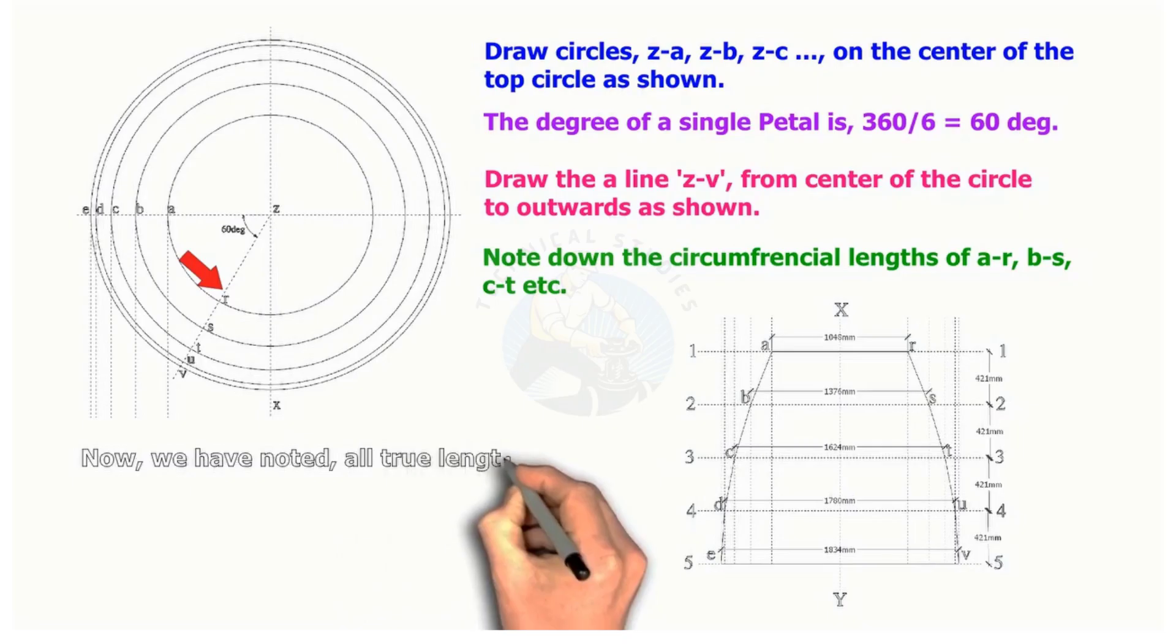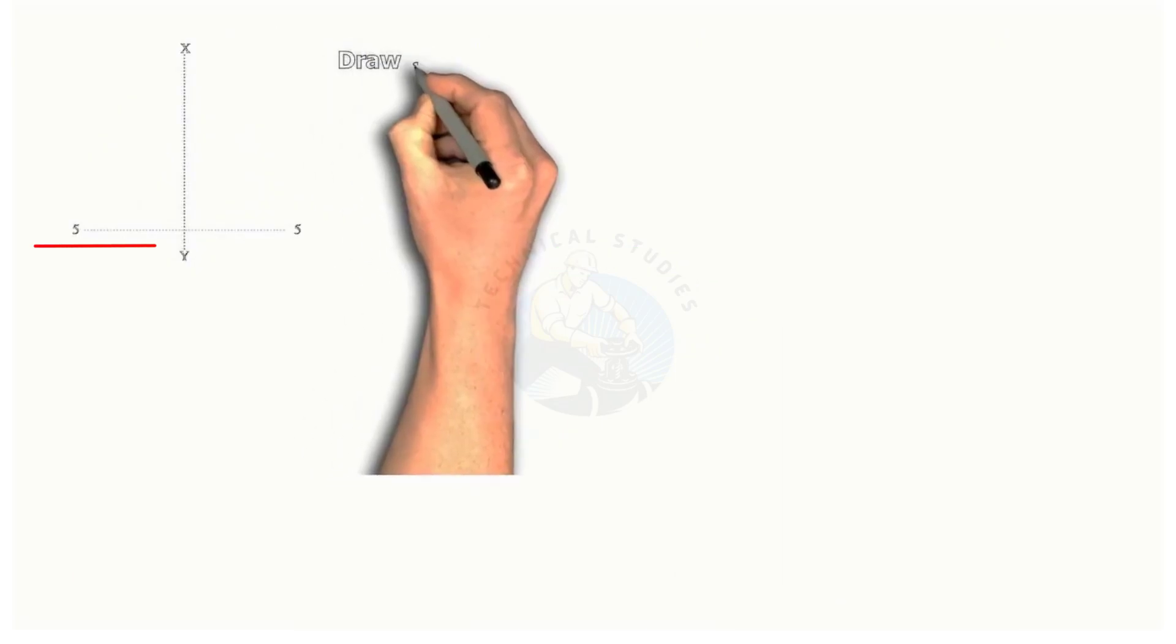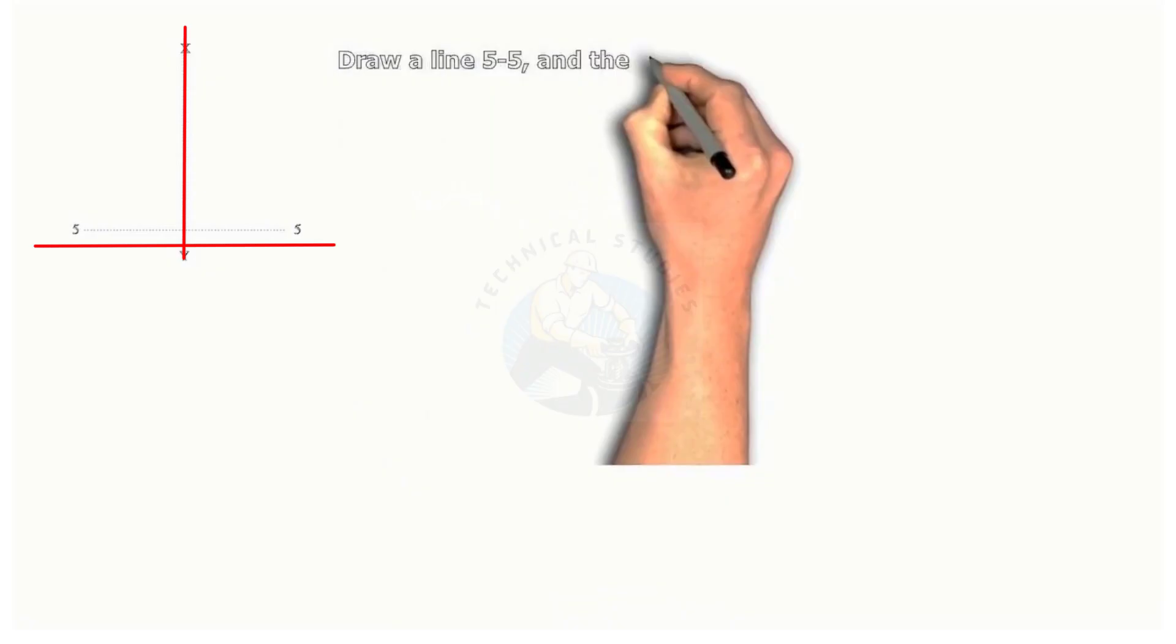We know all the arc lengths now. Let us mark it on a plate. Draw a line 5-5 and draw a vertical line X-Y.